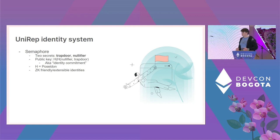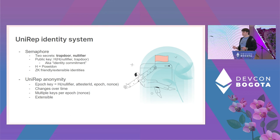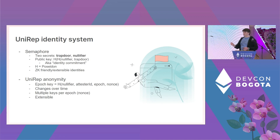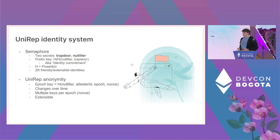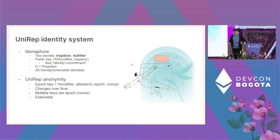Building on that, we have epoch keys — public keys that change over time, valid for the length of one epoch, a time period set by the attester. The epoch key is the hash of the nullifier, attester ID, epoch, and nonce. Because the epoch is part of the hash, it changes every epoch. The nonce, a value between zero and two by default, allows a user to have multiple epoch keys per epoch, so they can commit separate actions without linking their identity between them.